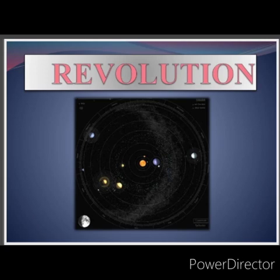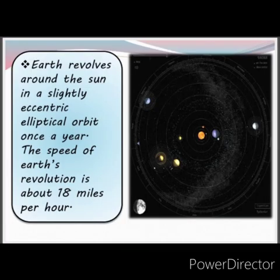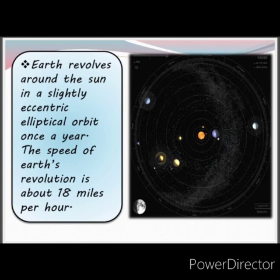Revolution. The Earth revolves around the Sun. The Earth takes 365 and one-quarter days to complete one revolution — that is one year. The Earth revolves around the Sun in a slightly eccentric, elliptical orbit. The speed of Earth's revolution is about 18 miles per second.